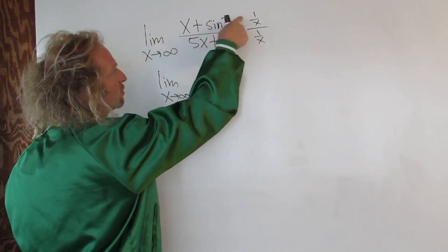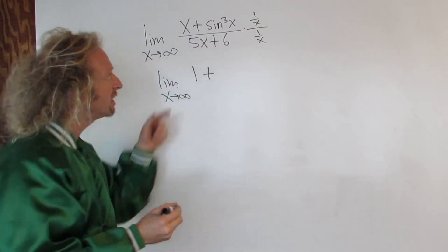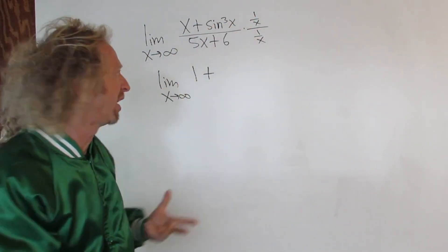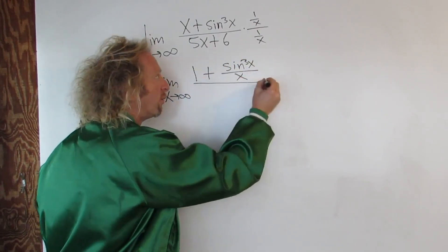So we have x times 1 over x. That's going to cancel. It's going to give us 1. Plus, and then sine cubed of x times 1 over x. That's sine cubed over x. Over.